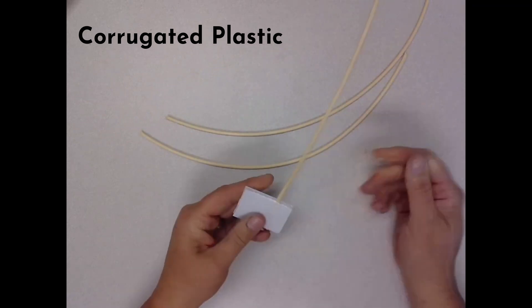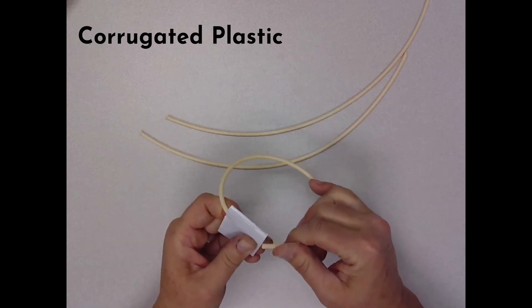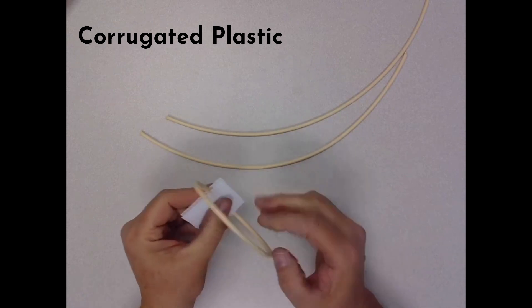All you do is slide the reeds into the holes of the corrugation. You can see how well it works to just make a really quick circle and it holds really strongly.